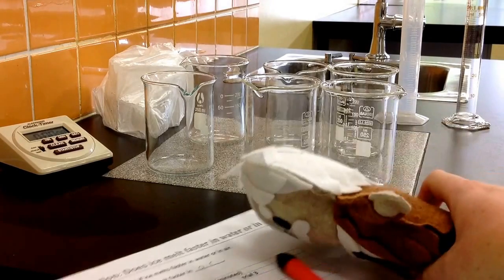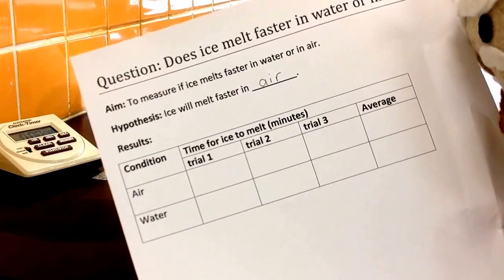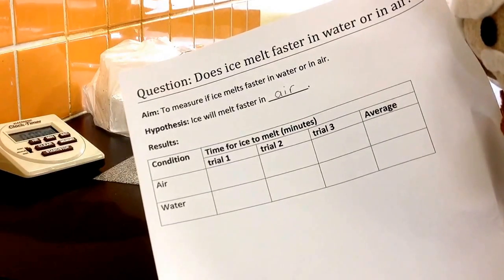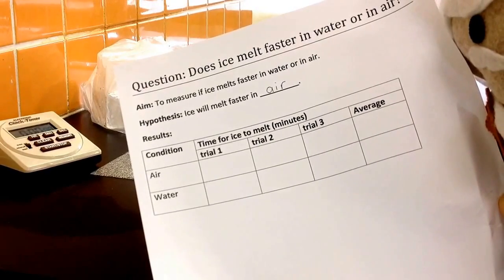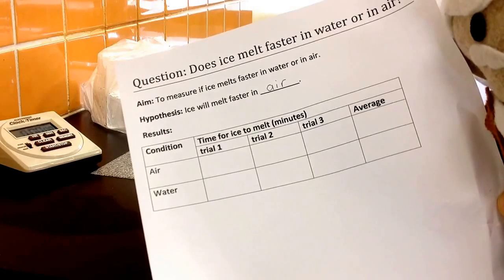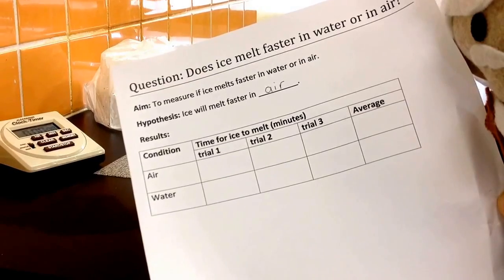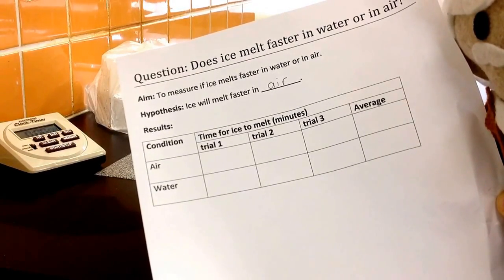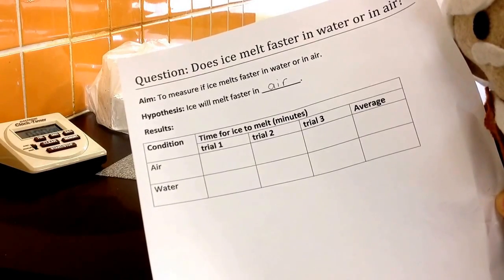We've already written up our investigation. Our method isn't here, but our aim is that ice will melt faster in water or in air, and we're going to measure if that happens. The hypothesis is that ice will melt faster in air, and you can also have water instead of that. The key thing with the hypothesis is that you have a direction of what you might be expecting to see. You can see my table for results which needs to be drawn before you start an experiment so that while you're doing the experiment you have some way to write your results.